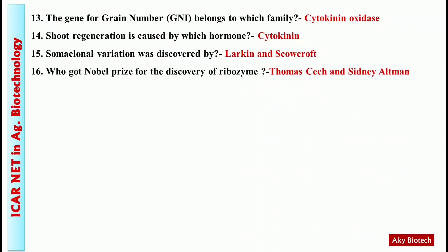Question 16: Who got the Nobel Prize for the discovery of ribozyme? Answer: Thomas Cech and Sidney Altman — these two received the Nobel Prize for the discovery of ribozyme.